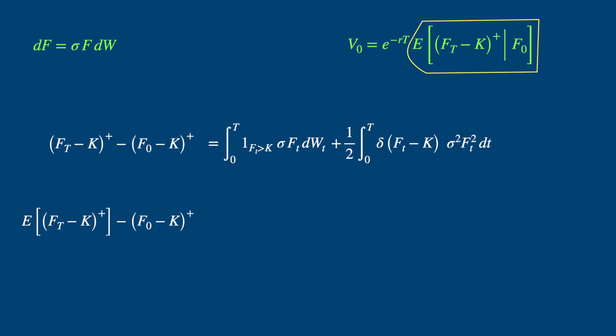The expected value of the first integral on the right hand side is 0, by the property of the Ito's integral, which says that the expected value of the integral of an adapted function with respect to the Brownian is equal to 0. And in the second term, we take the 1 divided by 2 out of the expectation.